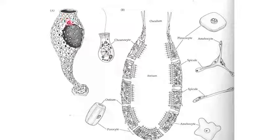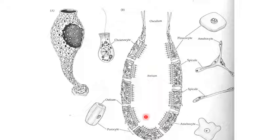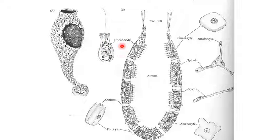If we make a longitudinal section of a sponge, we can see the pores on the body wall — these are the ostia (singular: ostium). These openings lead into the central cavity called the spongocoel. The spongocoel opens out at the apical end through the osculum. A characteristic feature is the collar cells — choanocytes — which have a collar-like structure with cilia and flagella, and they line the spongocoel and canals.